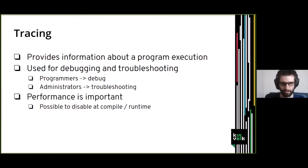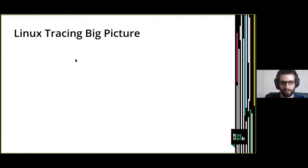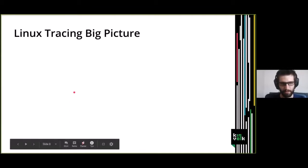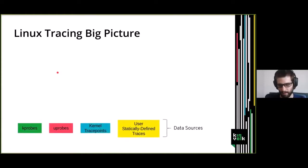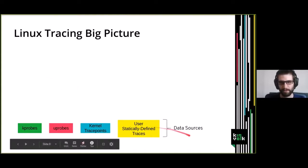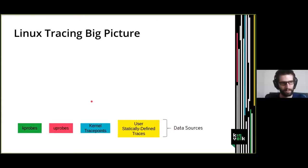It should be possible to disable or enable tracing at compile or runtime. For Linux tracing in particular, we can divide it into three different layers. The first layer is the data sources — the components that provide information about what is going on. These are connected to applications or to the kernel to get information.